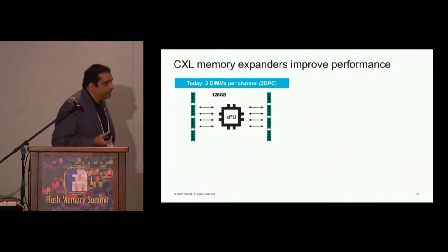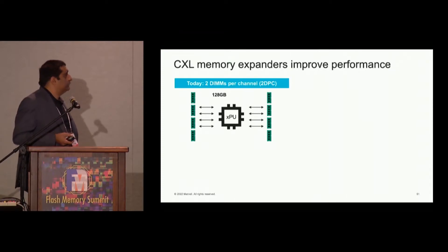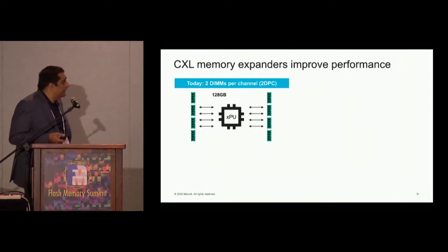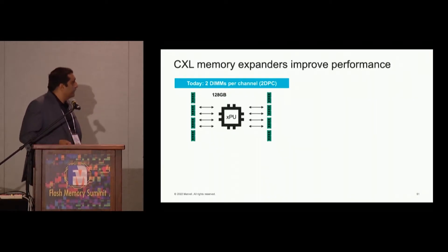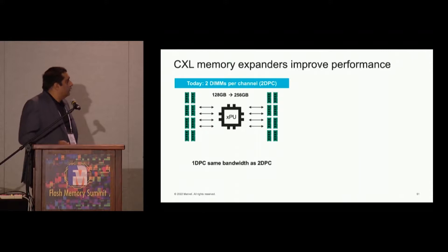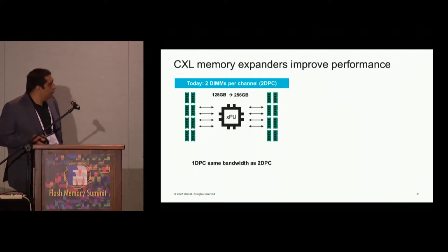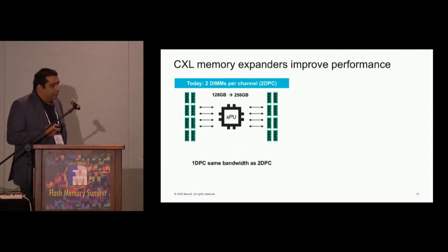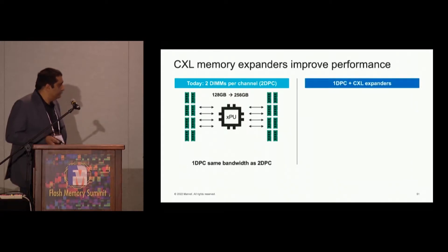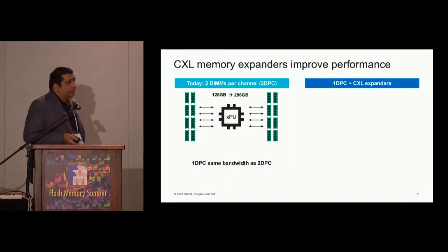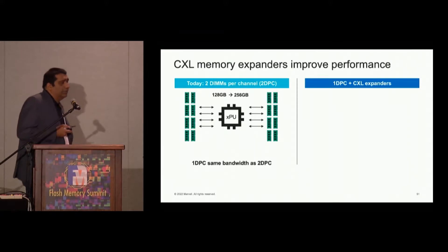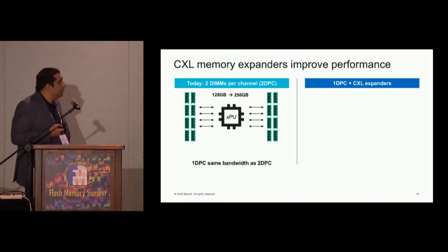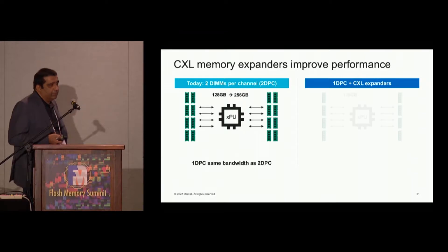There are a number of use cases we are solving for the cloud data center. It starts with memory expanders. Today there are two DIMMs per channel, but when you add a second DIMM, you don't get any more bandwidth — you do get more capacity. If you want bandwidth, adding more DIMMs cannot solve that. With CXL expanders, as memory speeds are growing, a lot of CPU vendors are having to go to one DIMM per channel, and CXL expanders allow you to get more capacity and bandwidth for the host processors.